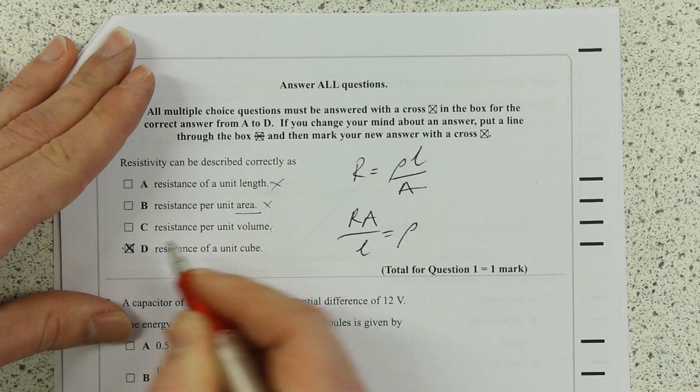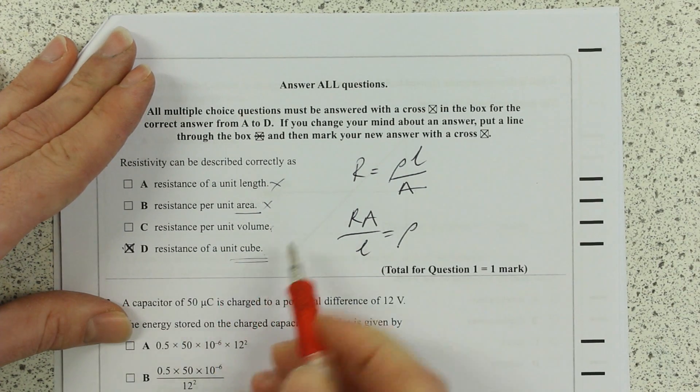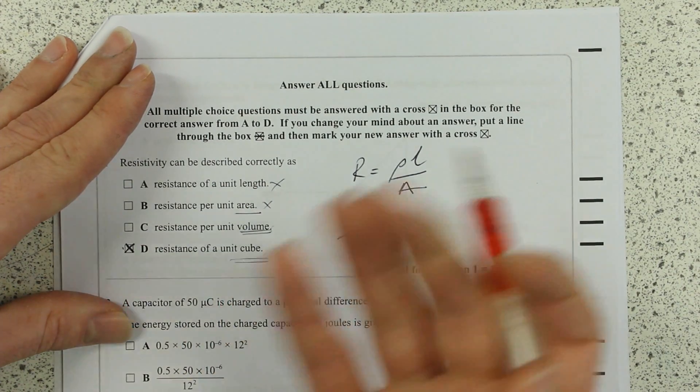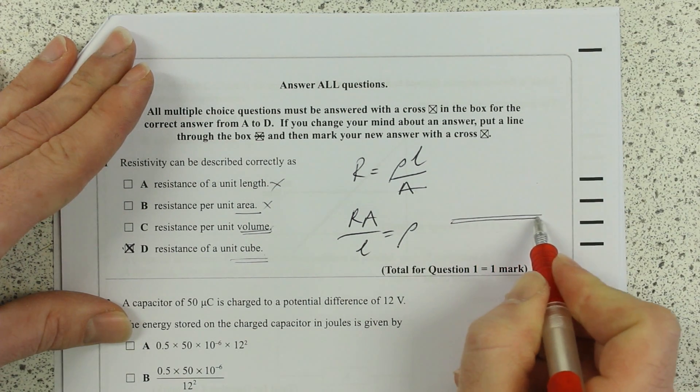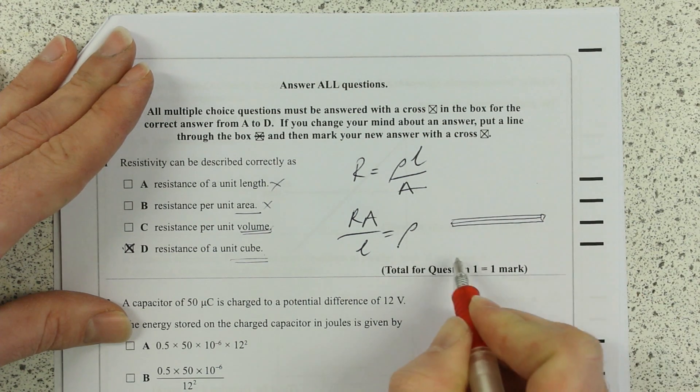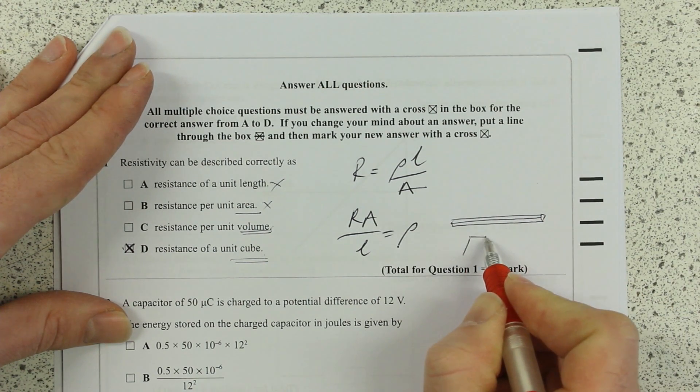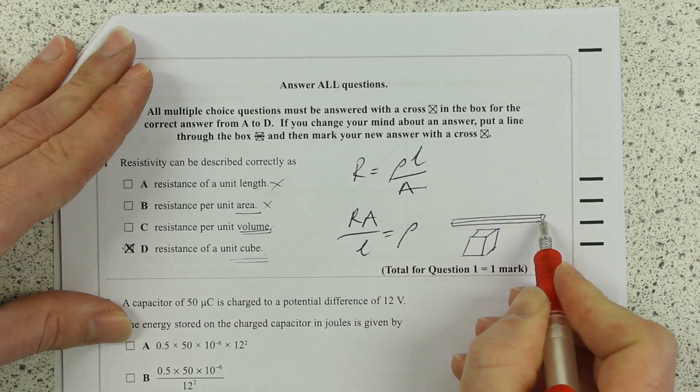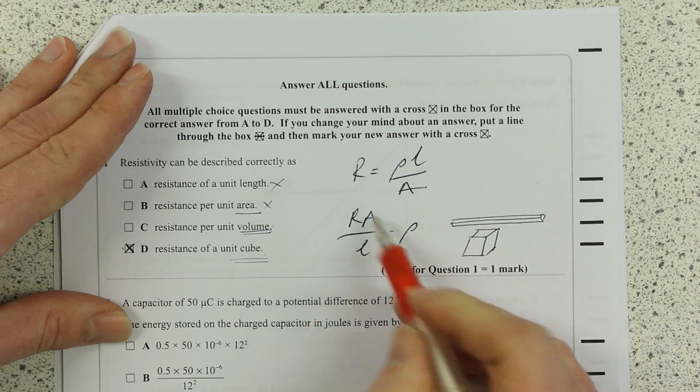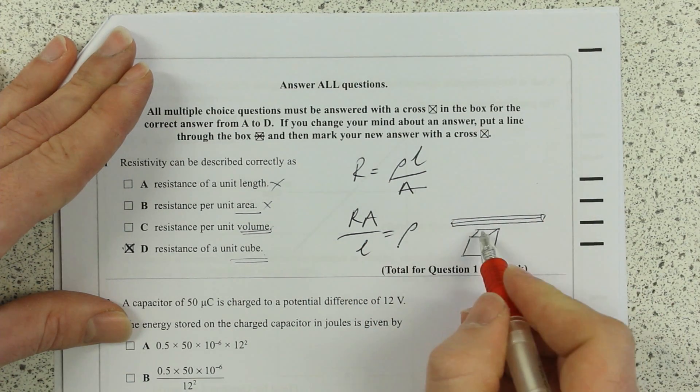Why is it resistance of a cube rather than volume? Well, try and imagine the same volume but as a very long thin wire, and then that same volume but as a cube. Clearly, a longer length, smaller area, it's going to have a higher resistance. So it does matter how they're related.